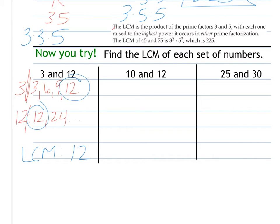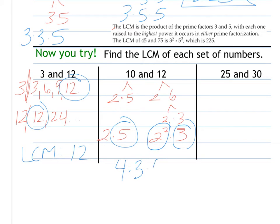For 10 and 12, I could list them out or I could do prime factorization. 10 is 2 and 5, 12 is 2, 2 and 3. So I have 2 times 5 and 2 squared times 3. I pick the one, since they both have 2, this is the highest power. And then I have 3 and 5. So I really have 4 times 3 times 5, which is 12 times 5, which is 60. Notice again, they both had 2, but 2 squared is the highest power, so I choose that 2 instead.